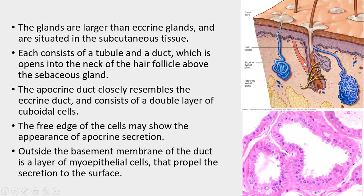Apocrine glands are larger than the eccrine glands, as can be seen in the comparative picture, and are situated deeper — mainly in the subcutaneous tissue. Each gland consists of a tubule and a duct that is relatively shorter than the eccrine duct and opens into the hair follicle above the sebaceous glands. The apocrine duct consists of a double layer of cuboidal epithelium. The free edge of the cells shows apocrine secretion by pinching off cytoplasm. Outside the basement membrane, a layer of myoepithelial cells propels the secretion to the surface.